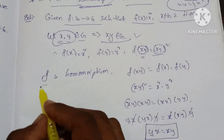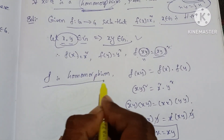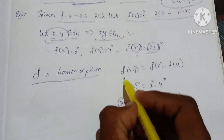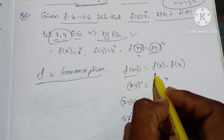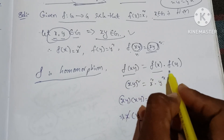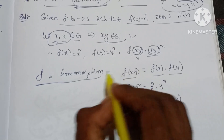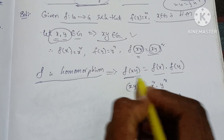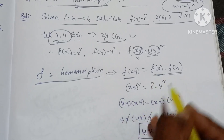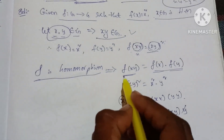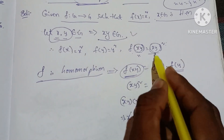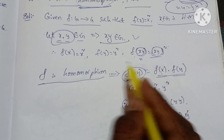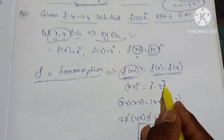Since f is a homomorphism, the condition is f(xy) = f(x)·f(y). So, f(xy) = (xy)², f(x) = x², and f(y) = y².